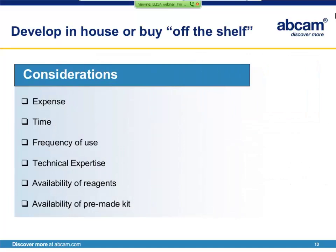A major decision you'll face after deciding that an ELISA assay is what you need will be whether to develop the ELISA assay yourself or to go ahead and purchase a premade kit from a supplier. One thing to consider would be the expense. If you combine the cost of all the reagents you'll need to put together your own ELISA, it will likely be substantially more than if you were to buy a single kit from a supplier.